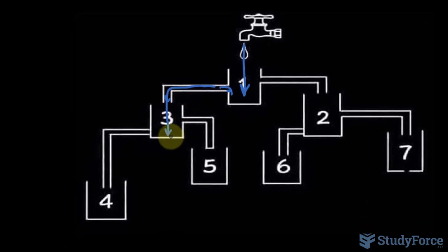So as the water flows into three, you would think that it would flow down into four except that the pipe is closed. So if your answer was four, it's impossible because there's no pathway to four.